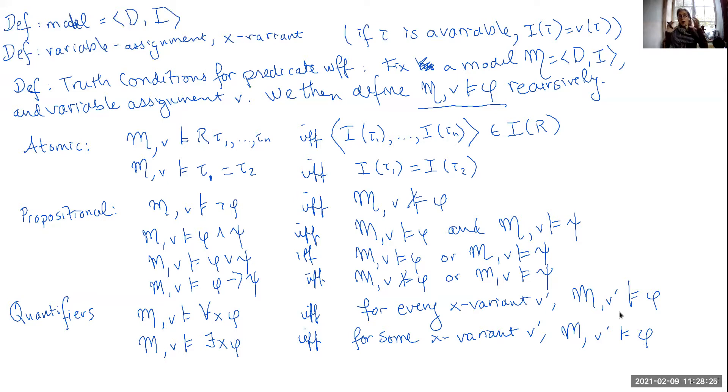So what we are doing here is say, it doesn't really matter what our variable assignment happened to assign to this particular variable in this particular model. In order to know whether something is true of every object in our domain, we have to consider every possible variable assignment, every possible value that X could take in this particular domain. Similarly, with the existential quantifier.